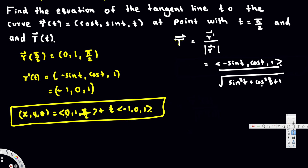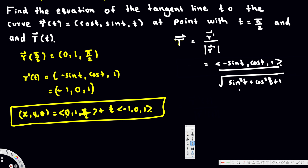Using the Pythagorean identity, sin²t + cos²t = 1, so the magnitude is √(1 + 1) = √2. Therefore, the unit tangent vector is (1/√2) · ⟨-sin t, cos t, 1⟩. I hope this helps, thanks for watching.